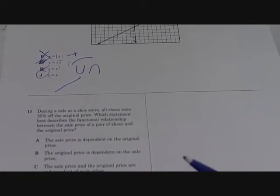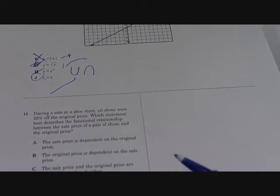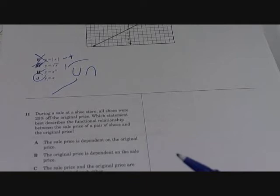During a sale at a shoe store, shoes were 25% off the original price. Which statement best describes the function relationship between the sell price of a pair of shoes and the original price?